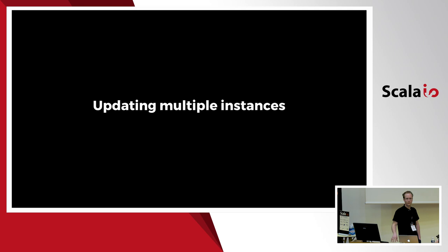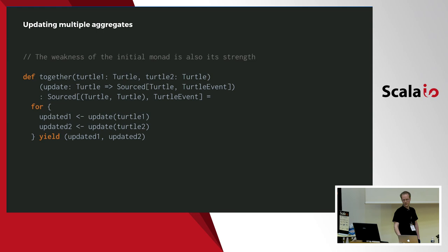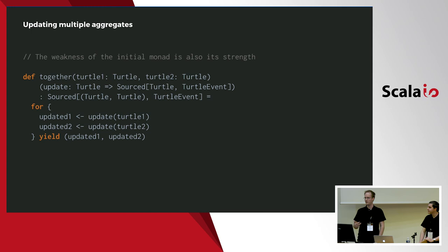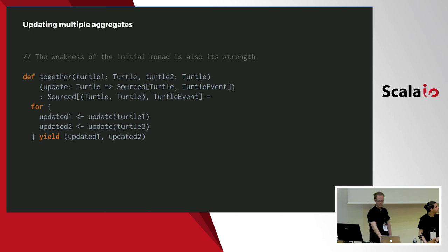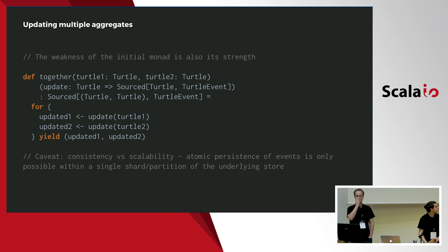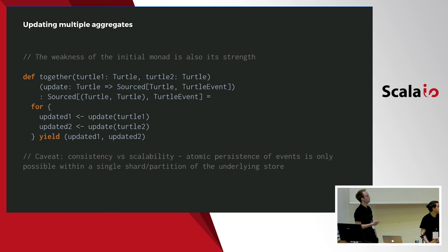What more can we get? An interesting thing is that the source monad actually allows us to compose modifications of different instances. We could write a 'together' function which applies whatever update we give it on both turtles and accumulates the events for both of them. Obviously there is a tradeoff between consistency and scalability here — this allows atomic operations on multiple instances, but if you want to shard or partition your event store, you'll need to make sure that events of instances you combine end up in the same partition of the store.